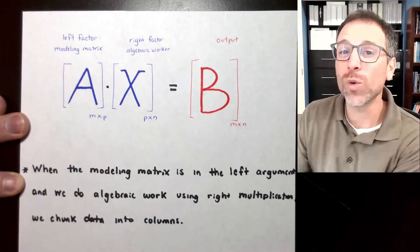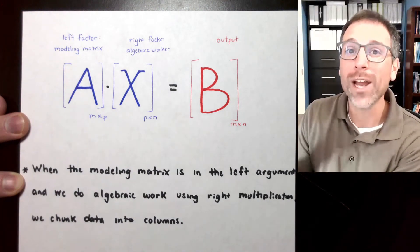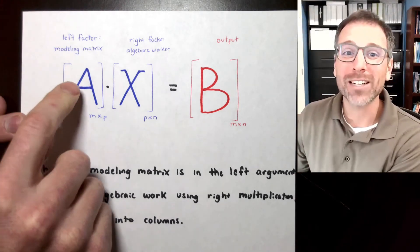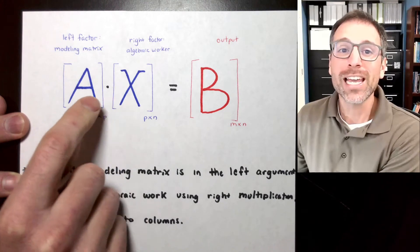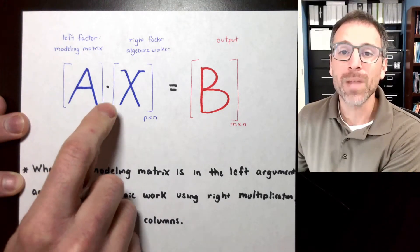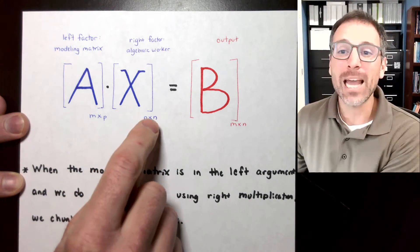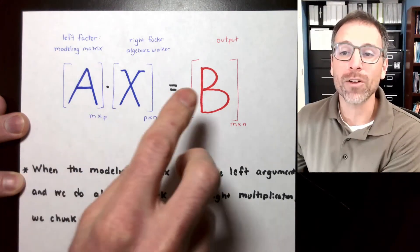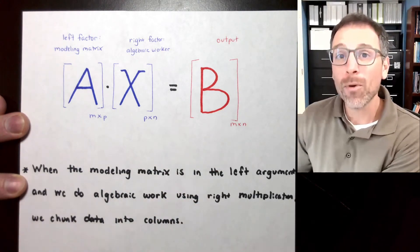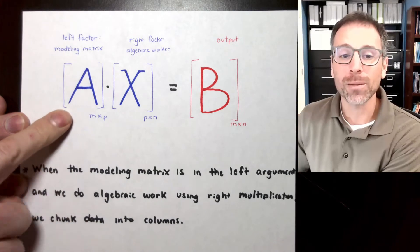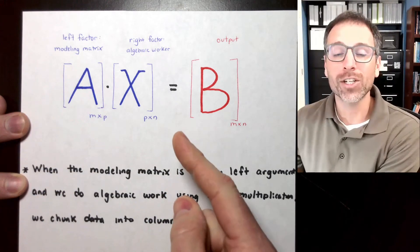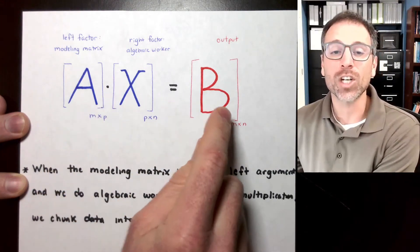I'm going to help you develop intuition about how to think about which version to use in which context. Let's go back to the anatomy of matrix-matrix multiplication. Here we have our left factor A, which we call an M by P. We have a right factor X, which we call a P by N. When we multiply those together, we get an output B, which is an M by N. When the modeling matrix is in the left argument and we want to do algebraic work using right multiplication, we can chunk all data into columns.